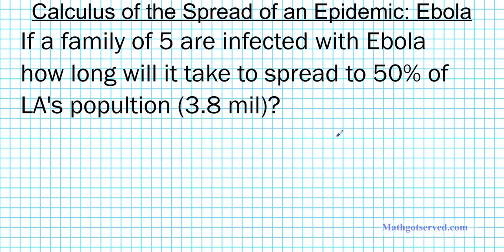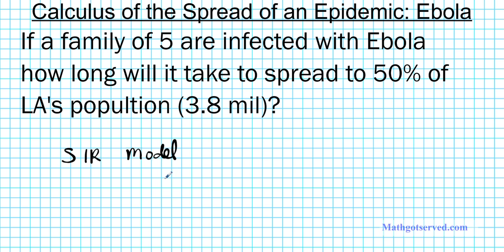We're going to be using the SIR model to basically understand the complexity of the situation. There are other models that can be used to model the spread of an epidemic, known as the stochastic model, but this is the model we're going to be using today. The SIR model basically involves dividing up the population into different groups or compartments.